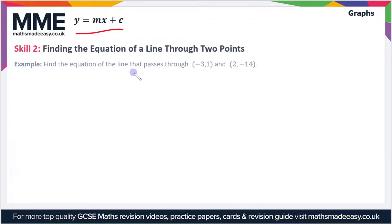In this example we have to find the equation of the line that passes through negative 3, 1 and 2, negative 14. The place we're going to start is by calculating the gradient.